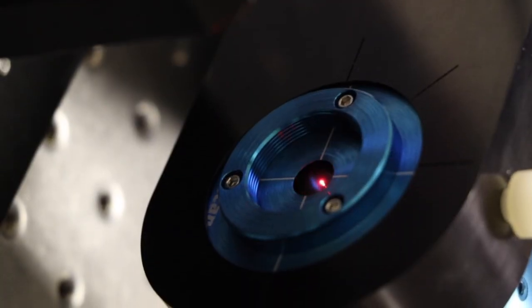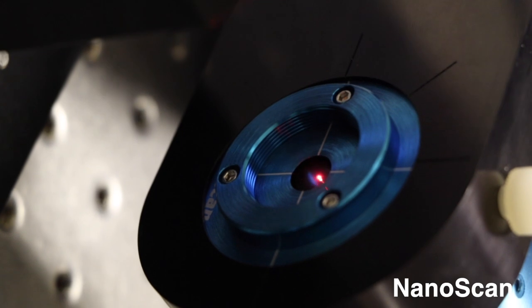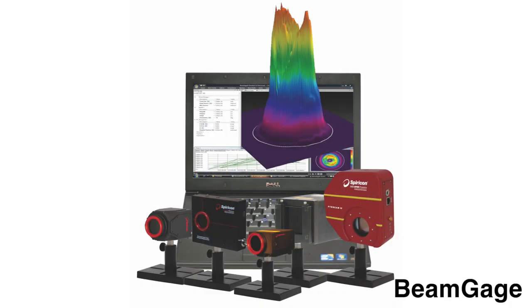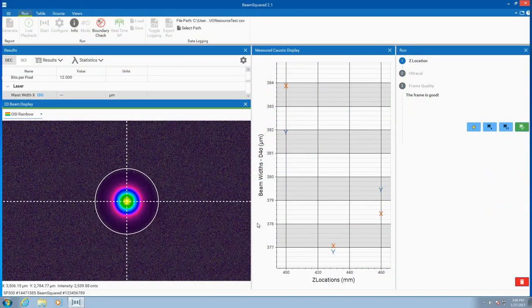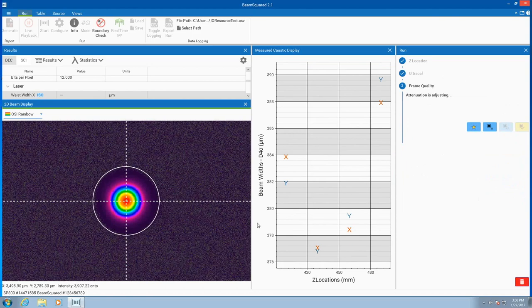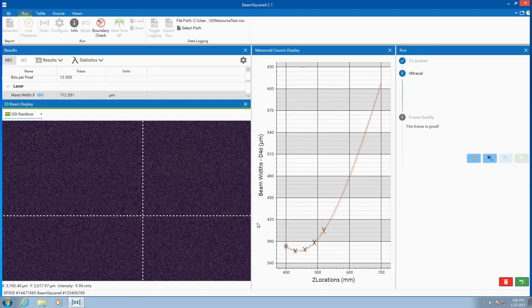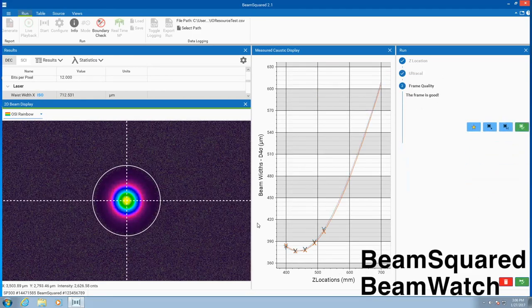Spatial intensity is measured by the nanoscan slit-based profiler, or a beam gauge camera appropriate for the laser's wavelength, allowing industry 4.0 level of data gathering and analysis. The location of the focused spot and M-squared, a measure of the quality of the laser beam, is measured by beam squared and beam watch.